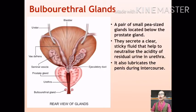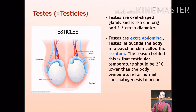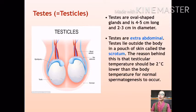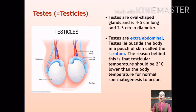The primary sex organs in males are the two testes, commonly also called testicles. Testes are oval-shaped glands of about 5 centimeters in length and 3 centimeters wide. The testes are extra-abdominal, meaning they are located outside of the body in a pouch of skin called the scrotum. The scrotum helps keep the testes at around 35 degrees Celsius, which is about 2 to 3 degrees below normal body temperature, for the effective production of sperms.